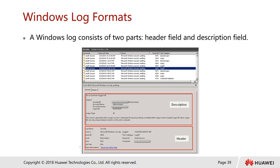For Windows log format, clicking on an individual event shows a header describing the event category. For example, this event is about a logoff — a successful audit showing that a user successfully logged out of the system. The details show it was the Administrator account that logged out successfully.